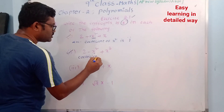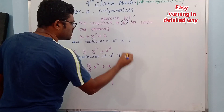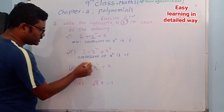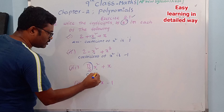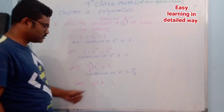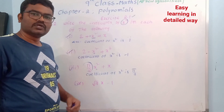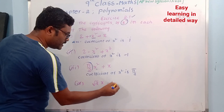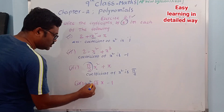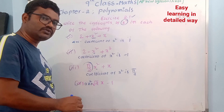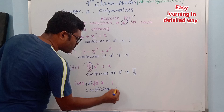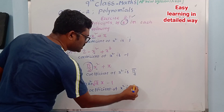Third expression: 5/2 x squared plus x. The coefficient of x squared is 5/2. Fourth expression: root 2 times x minus 1. There is no x squared term here — it is 0 times x squared — so the coefficient of x squared is 0.